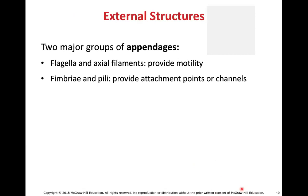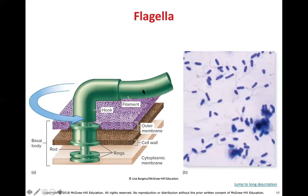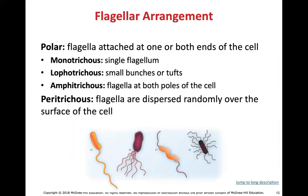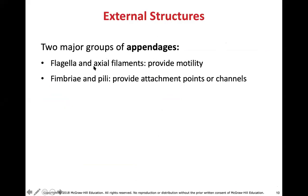Next up are external structures — structures found on the outside of the cell, which we call appendages. These include flagella or axial filaments, whose main function is to provide motility for the cell. We then have fimbriae and pili, which provide attachment points or channels for communication between cells.